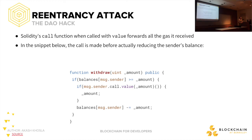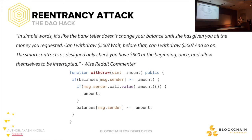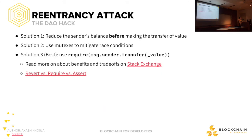You can think of someone trying to keep on withdrawing while the bank teller is still trying to subtract the balance — this is dangerous for obvious reasons. The solution: reduce the sender's balance before making the transfer of value. If you reduce the balance first, there's no fault in terms of sending money before it's been accounted for. You can also use mutexes to mitigate race conditions — you set a lock when you enter the withdraw function, so only one function call at a time can do this, and when it completes it unlocks. It's atomic in a sense.